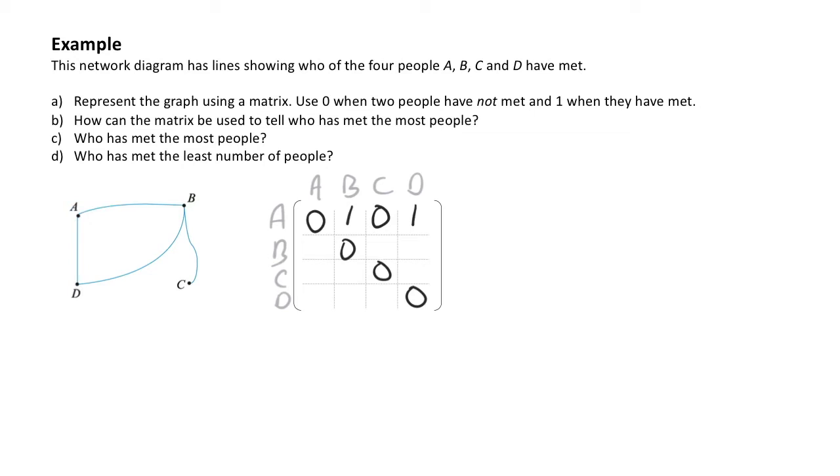Moving on to person B, I can see that person B has a connection with A, they have a connection with D and they also have a connection with C. So they're connected to all three other people. I'm going to go ahead and complete that row, adding in the ones.